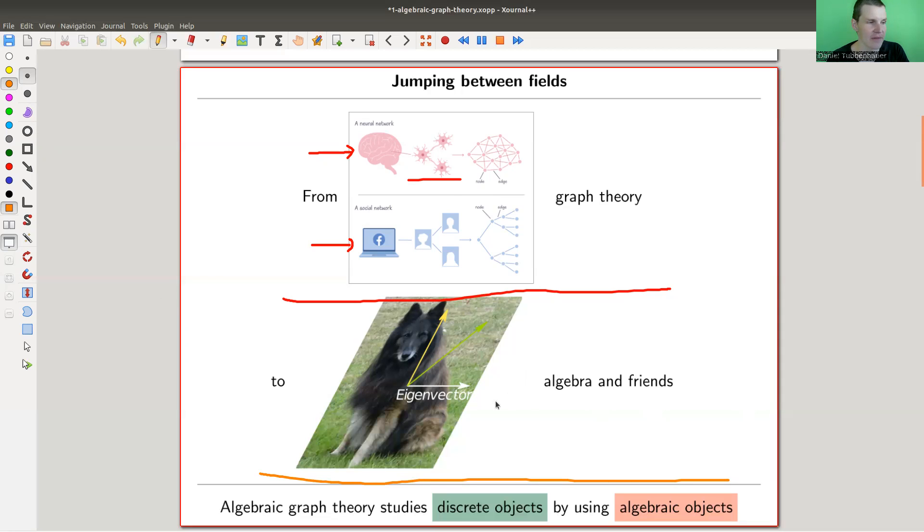It's much better to have a big hammer type theory, because you can just hammer everything to death. And the big hammer type theory is algebra. So graphs, there is just jumping through fields. For example, you can think of associating a graph to a matrix and then study the eigenvectors and eigenvalues of that matrix.